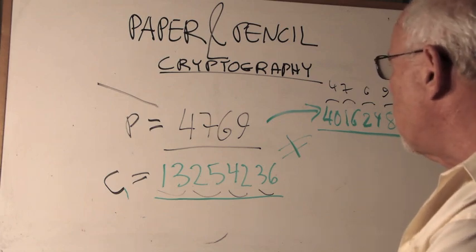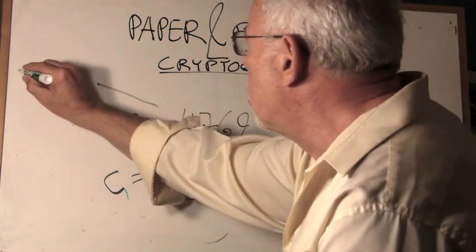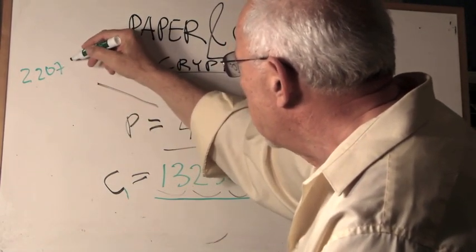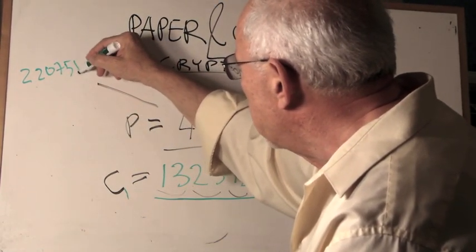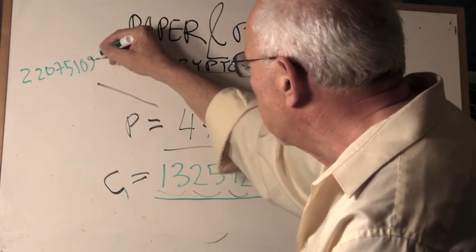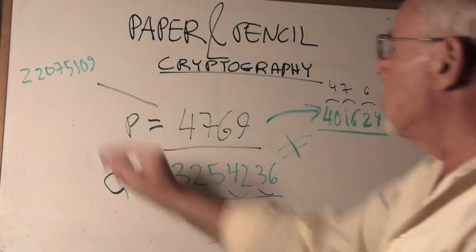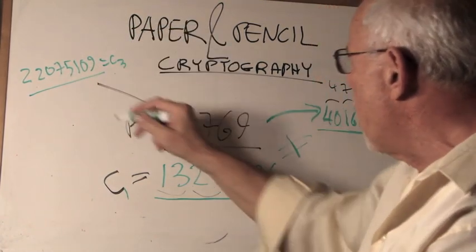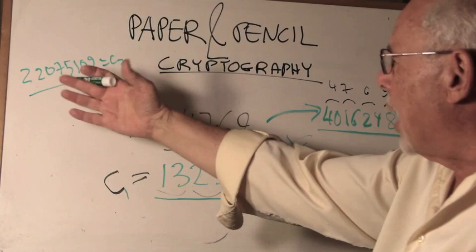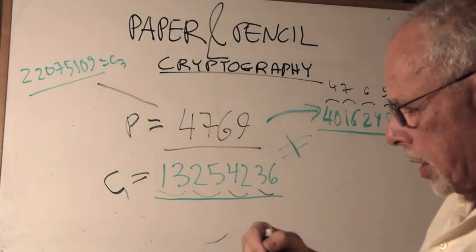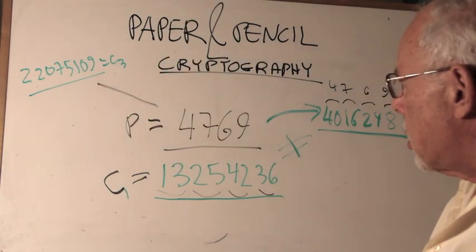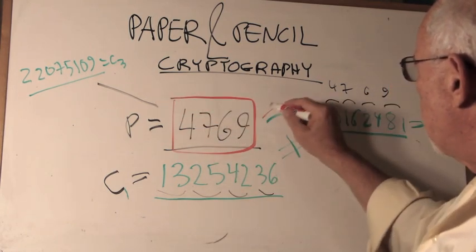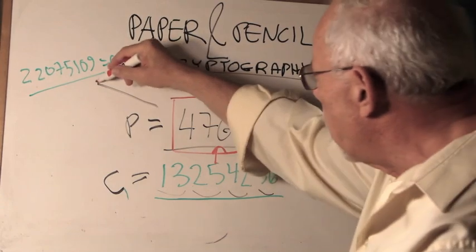And you can go here with a third cipher. This time it would be 2, 2, 0, 7, 5, 1, 0, 9. So, this is another cipher C to be that will decrypt back to the same plaintext. It's always the same plaintext. From here, from here, and from here.